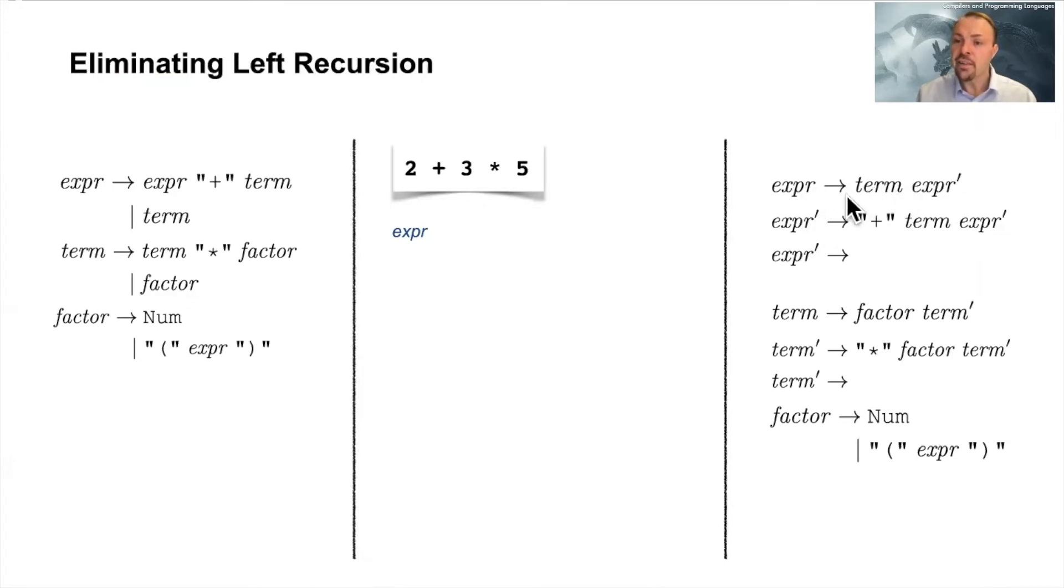So we need to replace it with this right-hand side. So we get term and expression prime, and then we can expand term. Term here also got just one option, so it's this one. You see that the other ones are term prime, so we expand that one as well, so we get the factor term prime. Then we can expand the factor, and what options do we have? We have a number and parenthesis, but the first part here is really just a number. Then after that, what options do we have for term prime? Well, we have multiplication and nothing, and we get a plus, so we cannot expand to the multiplication. That means that we have to replace this with nothing, so term prime disappears.